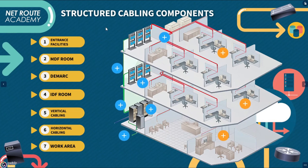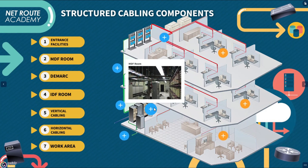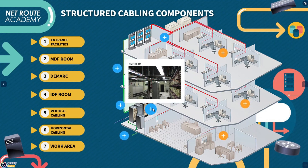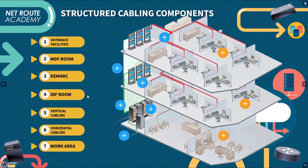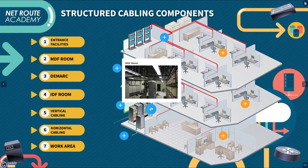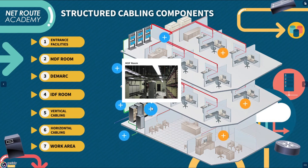Next on the list is the MDF, or Main Distribution Frame. The MDF connects to the ISP, IDFs on campus, and nearby workstations. It is also known as the equipment room — a controlled space that holds the main cross-connect and serves as the centralized point of interconnection for the company or campus LAN or WAN. The term MDF can refer either to the racks holding the network equipment or to the room that houses both the racks and the equipment.